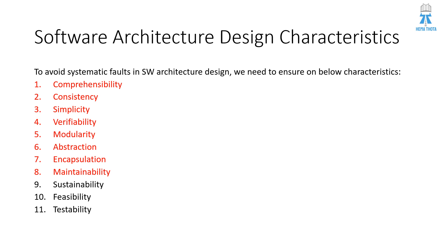The eighth characteristic is maintainability — easy to implement changes, fix defects, and restore the system. Additional characteristics include sustainability, which relates to the configuration of the software, and feasibility, which is about the design and implementation of software units. Since software architecture sits at the integration level, it can be verified through software integration testing. Testability refers to how the software architecture design can be tested, and it is generally tested during software integration testing.